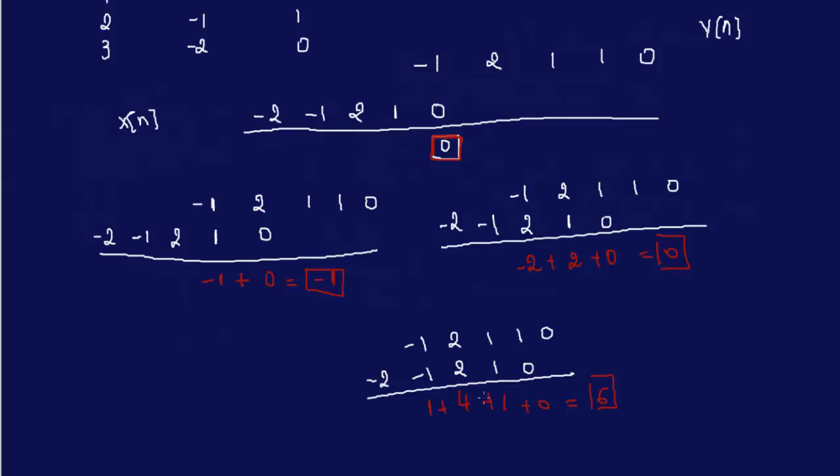We keep going, shifting and shifting and shifting, and then multiplying the overlaps and adding the sum until you will end up with the final answer. Just like the previous video, you will have a sequence like this: 0, minus 1, 0, 0, 6, 3, minus 3, minus 3, minus 2, and 0. So this is your V of n, basically.